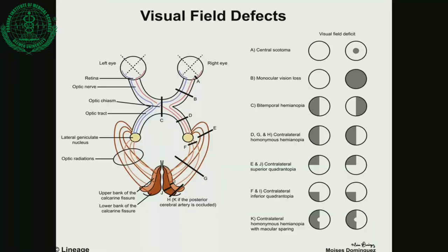Now we correlate these terms with the visual pathway. When there is damage at point A - that is, damage at the retinal level - there is observed central scotoma. When there is damage at point B - that is, damage to the optic nerve, such as the right side optic nerve - there is seen monocular vision loss, meaning complete loss of vision of one eye.